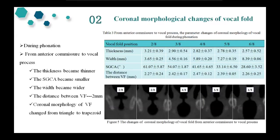Regarding chronomorphologic changes of the vocal fold during phonation: from the anterior commissure to the vocal process, the thickness became thinner, the subglottal convergence angle became smaller, the width became larger, and the distance between vocal folds was about 2 mm. The chronomorphology of the vocal fold changed from a triangular shape to a capsule shape during phonation.